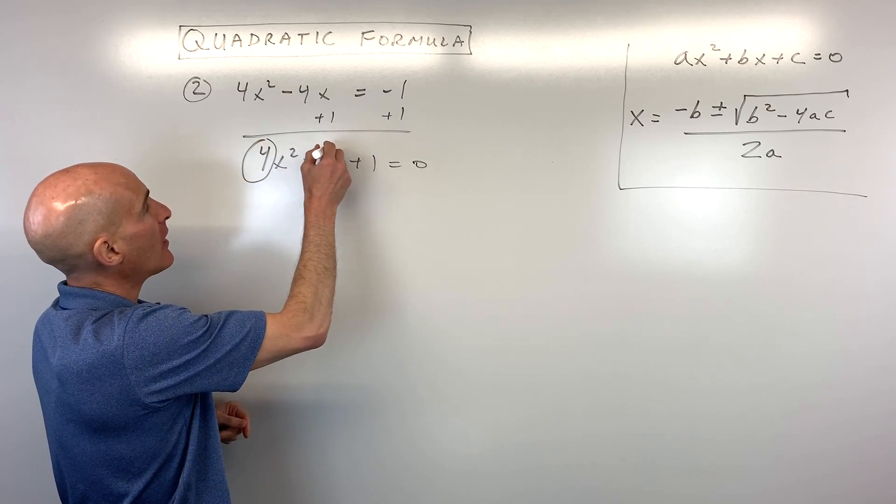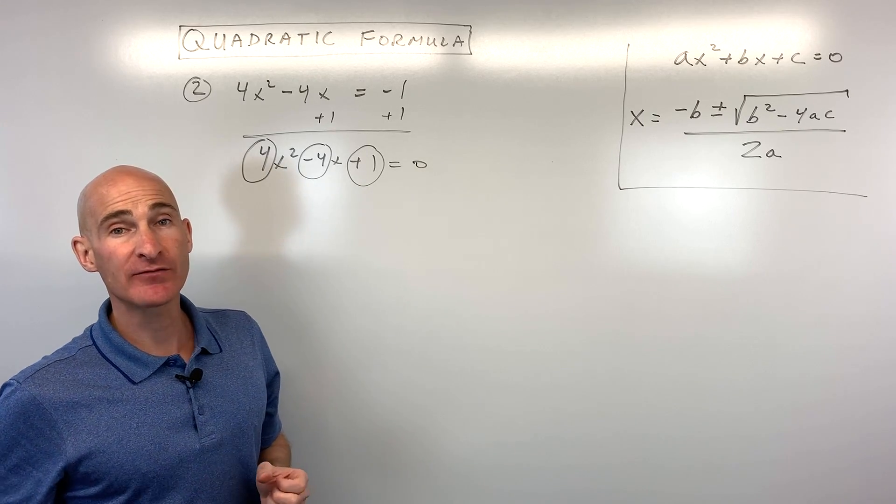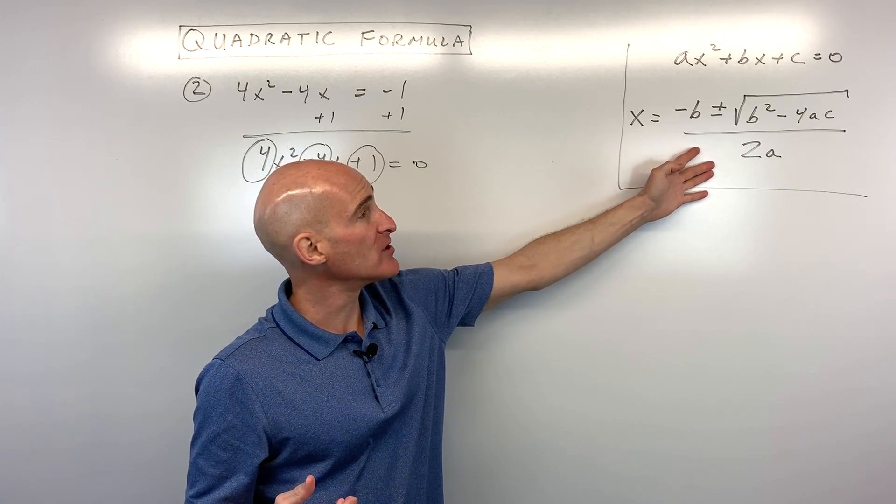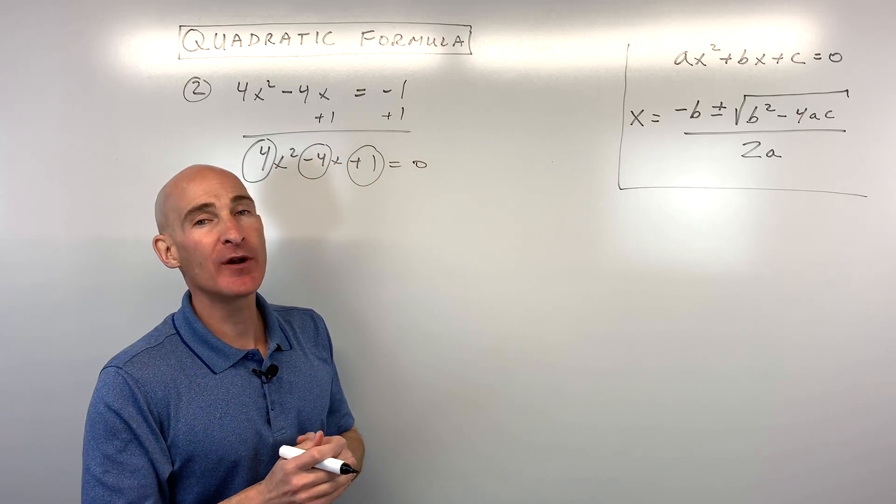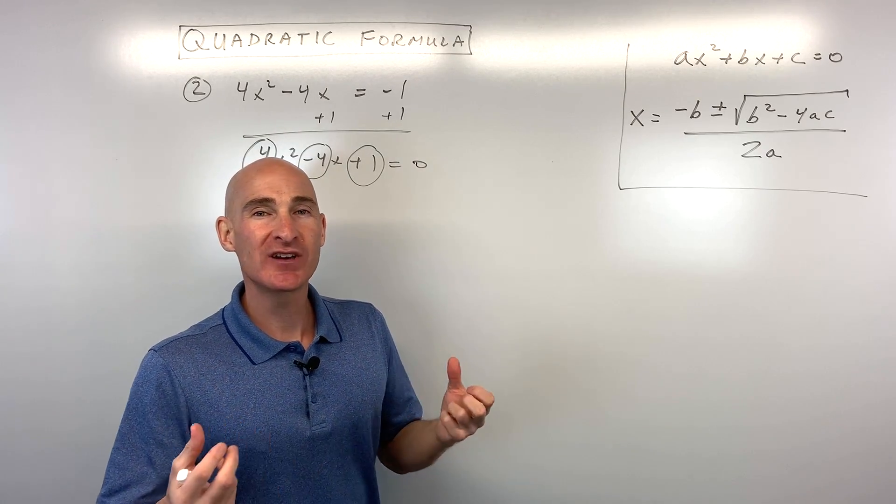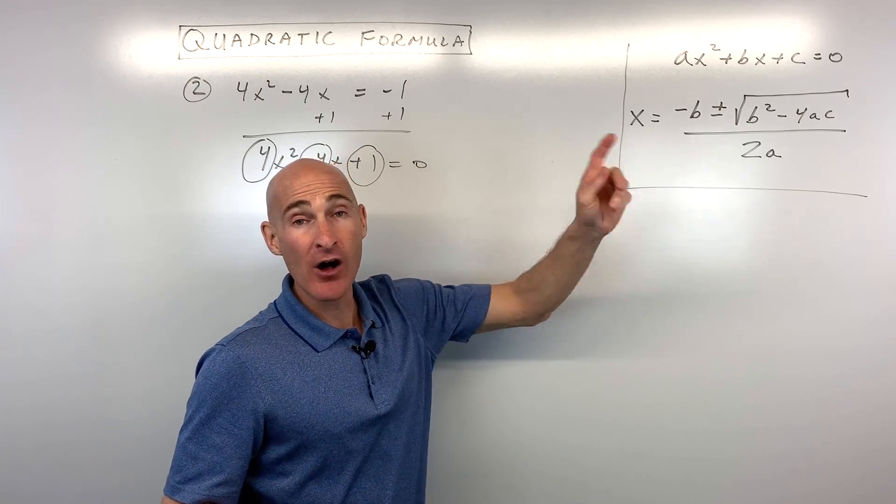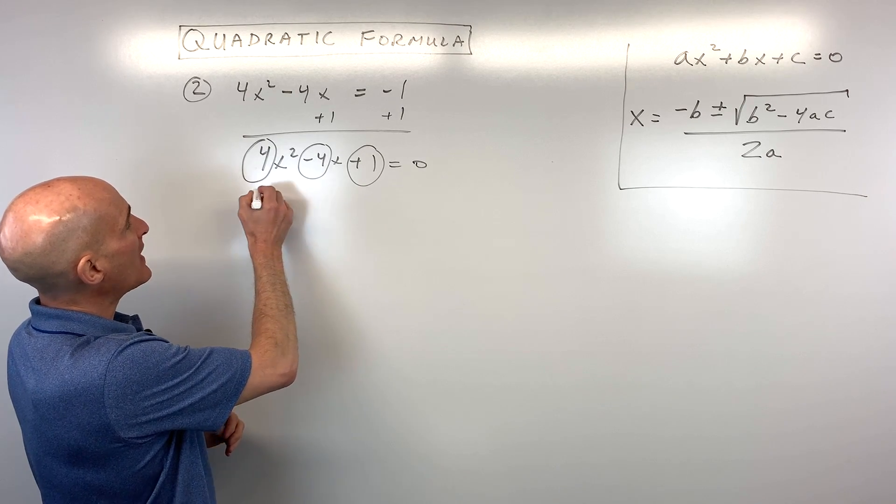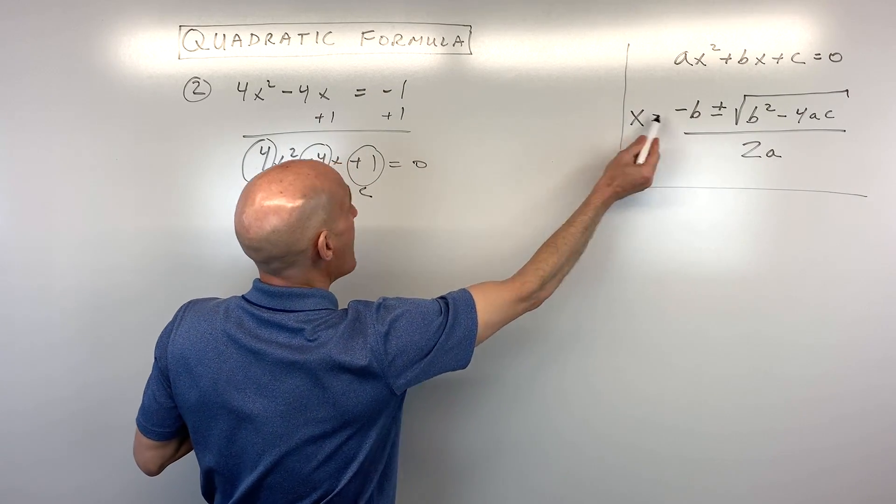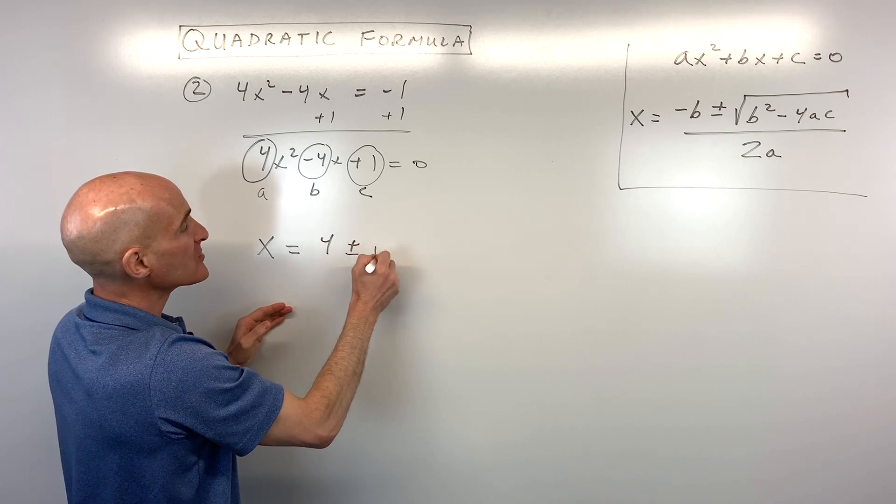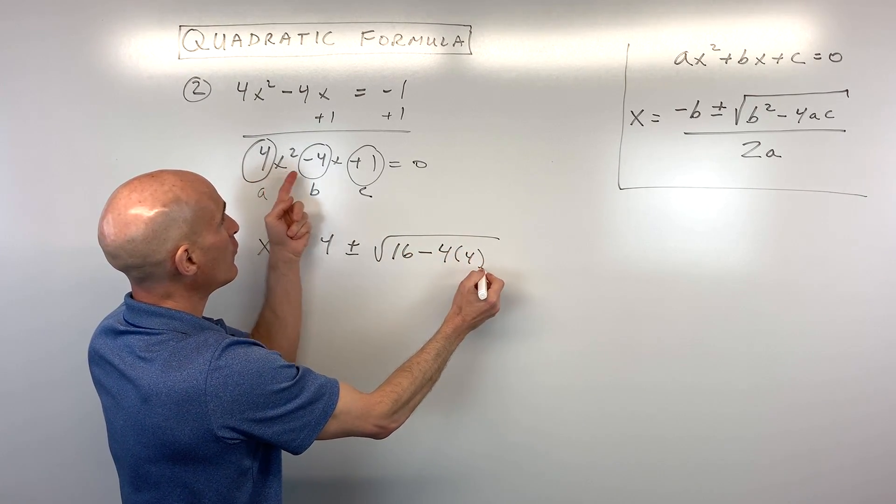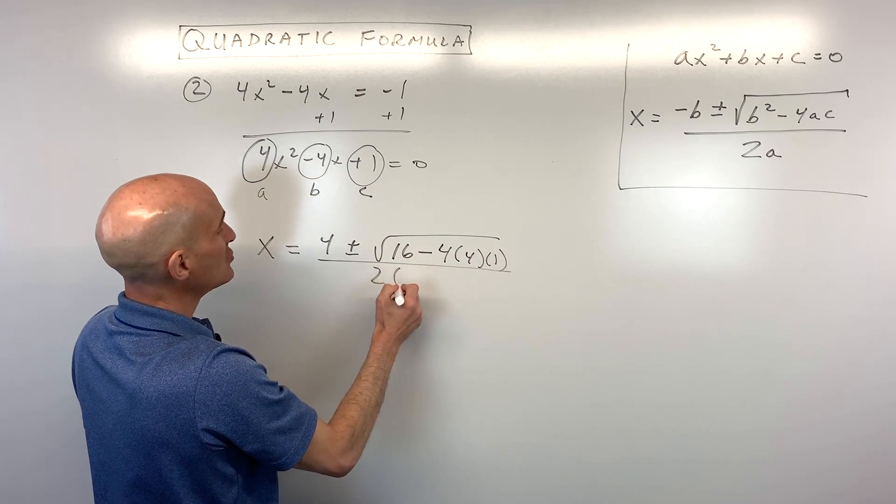And we can identify our A value, our B value, and our C value, making sure to capture whether it's positive or negative. All we have to do now is substitute it in the quadratic formula. So we have x equals the opposite of B. The opposite of negative 4 is going to be positive 4 plus or minus the square root of negative 4 squared. That's negative 4 times negative 4, or 16, minus 4 times A, which is 4, times C, which is positive 1, all divided by 2 times A, which is 2 times 4.